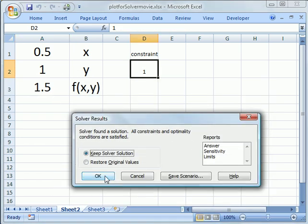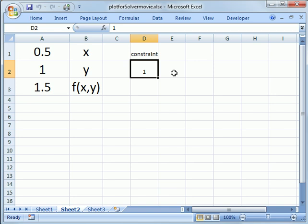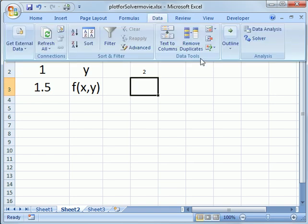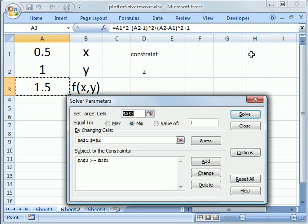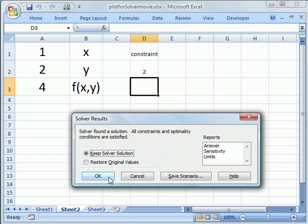What's nice about that, though, is now we can say what if we want a constraint to be two? Now we run the solver again, and we don't have to change anything because the constraint's the same. We say Solve, and now we get a new answer.